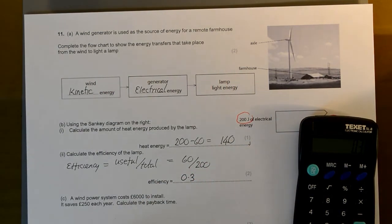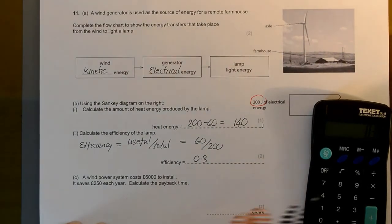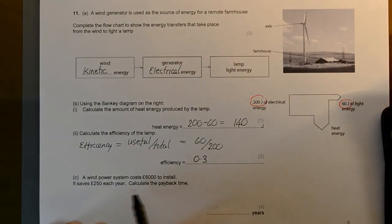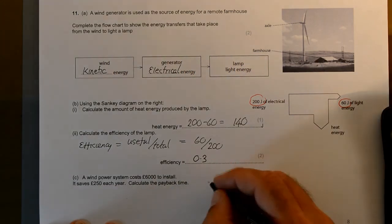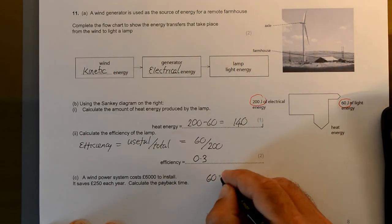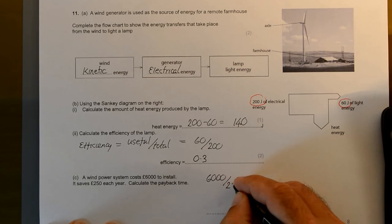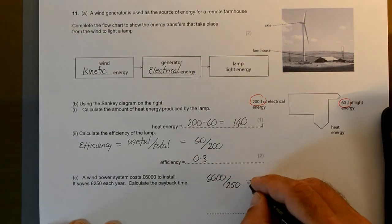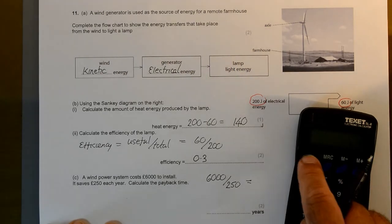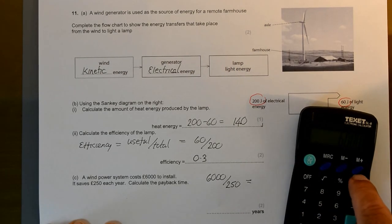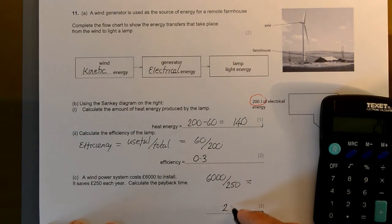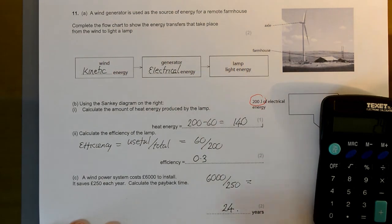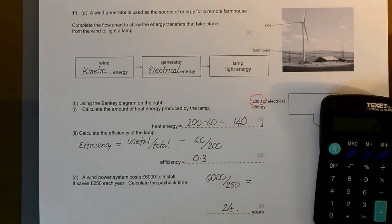A wind power system costs 6,000 pounds. It gives 250 pounds every year. Calculate the payback time. How many times 250 is 6,000? If we take 6,000 and divide it by 250 every year, it'll tell us how many years. 6,000 divided by 250 equals... it's going to take 24 years. You can do that in your head or calculator, but make sure you write it down.